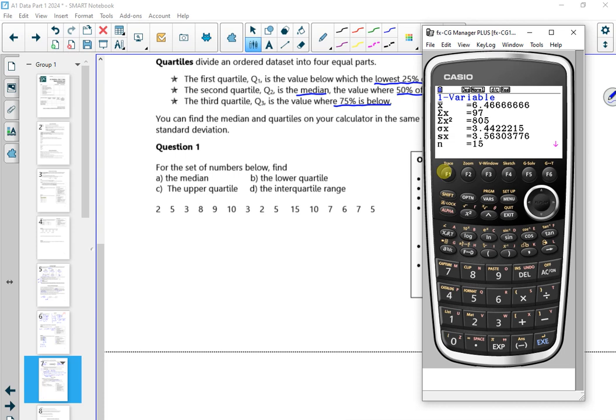So first of all, the median it wants. So let's scroll down. Let's have a look. I've got the minimum is two. I've got the lower quartile is three. I've got the median is six and I've got the upper quartile is nine.